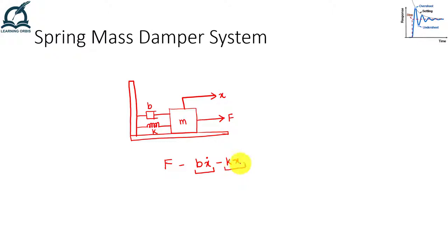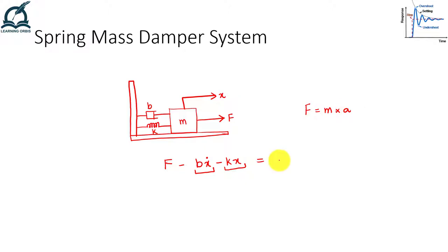This net force generates motion. According to Newton's second law, force equals mass multiplied by acceleration. So the mass will move with acceleration x-double-dot depending on the net force. This gives us the mathematical model of the spring-mass-damper system: F - B*x_dot - K*x = M*x_double_dot.